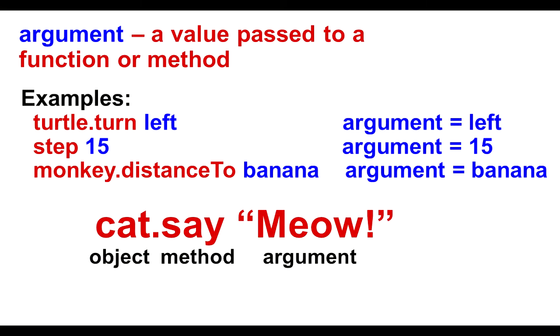An argument is a value passed to a function or method. It tells exactly how the method is being performed. The object turtle does the method of turning, but the argument passed to the method tells the program that the turtle is turning to the left. Step is the method. 15 is the argument passed saying that the monkey is stepping 15.